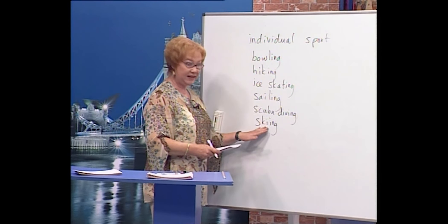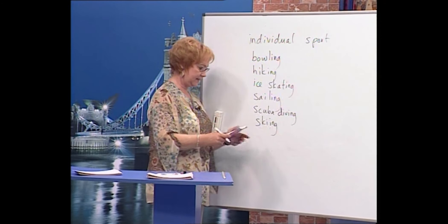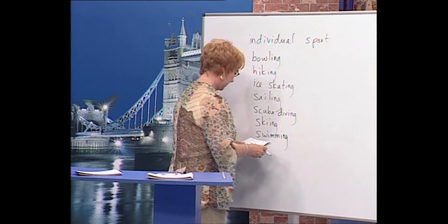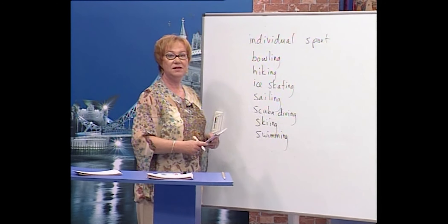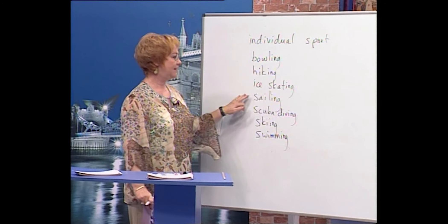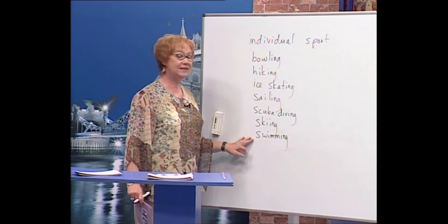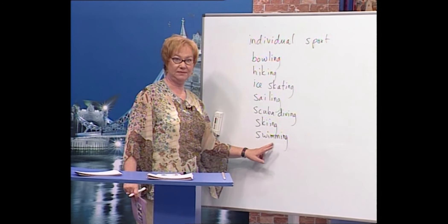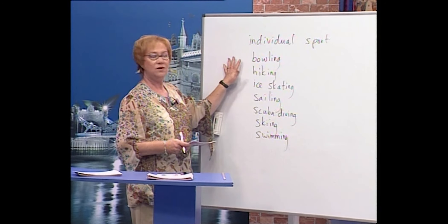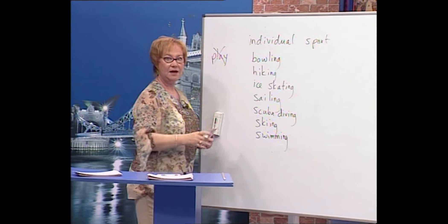Look at the spelling of 'skiing' — this is not a typical English word, so it has two I's together. That's special. And 'swimming' has two M's. Now, we don't say that we 'play' these sports.